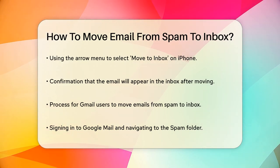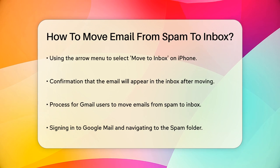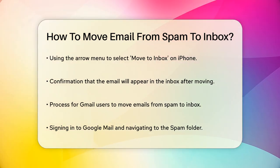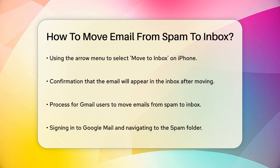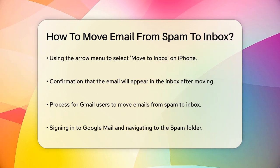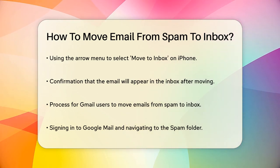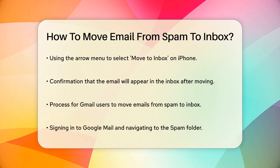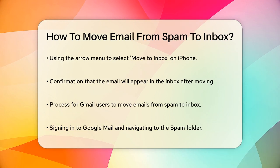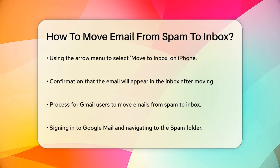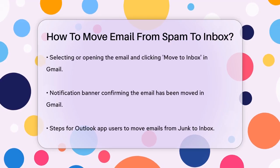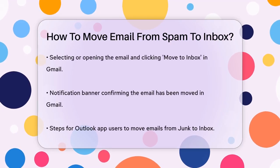For Gmail users, the process is a bit different. You need to sign in to your Google Mail account and go to the Spam folder. Find the email you want to move, open it or select the checkbox next to it, and then click on the Move to Inbox button. You'll see a black banner confirming that the email has been unmarked as spam and moved to your inbox.